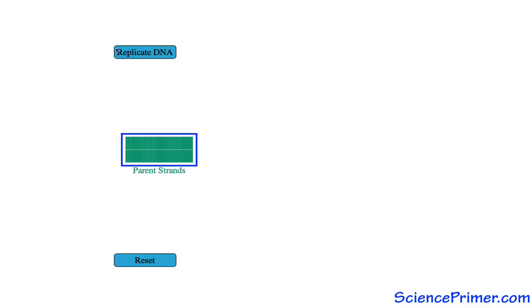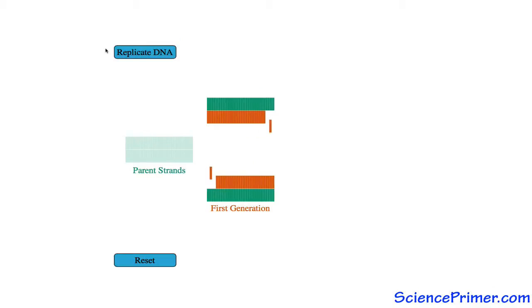During DNA replication, a double-stranded DNA molecule separates and each strand is used as a template for the synthesis of a new strand. This results in the formation of two identical copies of the original double-stranded molecule. This is called semi-conservative replication.